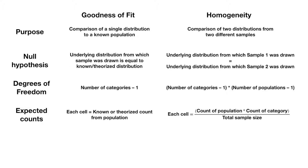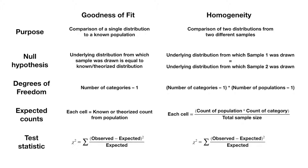In the end, though, the test statistic for a chi-squared distribution is exactly the same. We take our observed minus our expected, squared, divided by expected, and sum them up across each cell. In a homogeneity test, it's exactly the same.